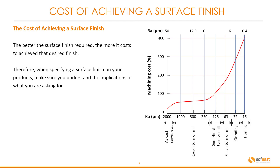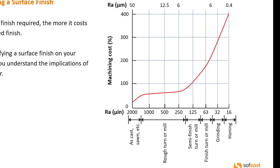The better the surface finish required, the more it costs to achieve that desired finish. Therefore, when specifying a surface finish on your products, make sure you understand the implications of what you are asking for. This chart gives a comparison of machining cost percentage versus machining process and RA value. For rough turning or milling, the RA value is 500 micro-inches and cost is around 60% relative to as-cast or sawn. Whereas grinding has an RA value of 32, which is much finer, but the cost is around 280% greater than as-cast or sawn.